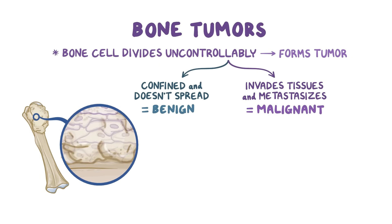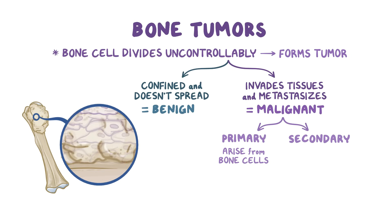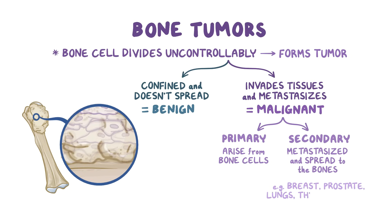Malignant tumors can either be primary, which is when they arise from bone cells, or secondary, which is when a tumor develops somewhere else in the body, metastasized, and spread to the bones. The most common sources of tumor cells that affect the bones but start somewhere else in the body are the breast, prostate, the lungs, the thyroid, and the kidneys.